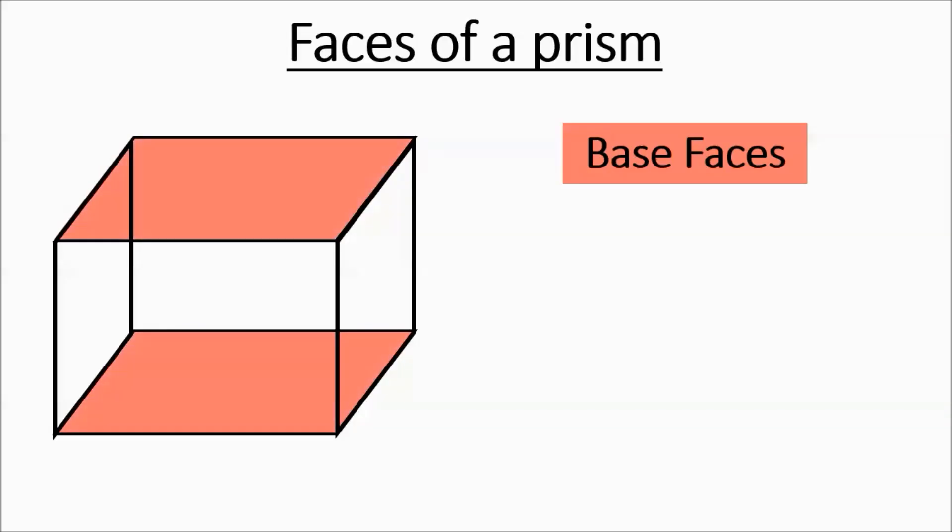Now, with a rectangular prism, all of this is interchangeable. You could turn this on the side and some other faces would be the base faces, but usually it's going to be the top and bottom. They're going to be parallel to each other. All opposite faces are going to be parallel to each other in a prism.